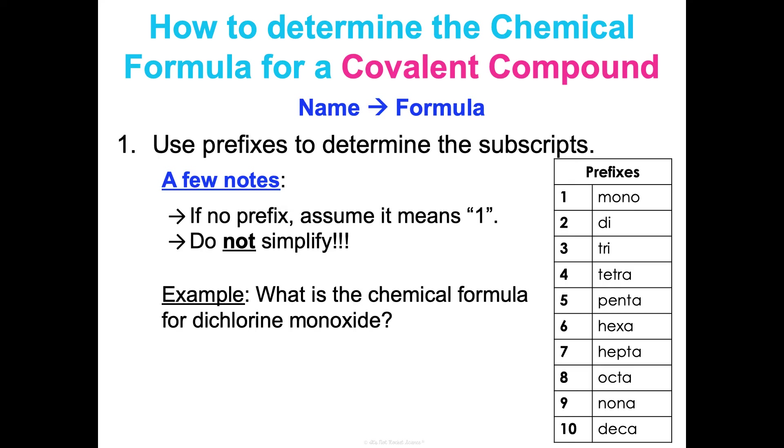Let's go the other direction. What is the chemical formula for dichlorine monoxide? Di means two, so that means there's two chlorines. Mono-oxide means there's one oxygen, so Cl2O.